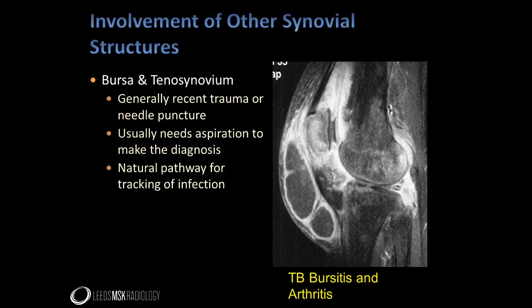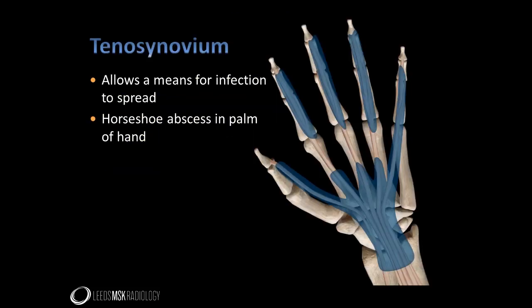Any synovial-lined structure can become infected, so in addition to joints we can also see infective bursitis and tenosynovitis. Generally the mode of inoculation in these structures tends to be through trauma including needle puncture. As with joint infection, aspiration will generally be required to make the diagnosis. Bursi and tendon sheaths can be large and provide a means for infection to track to sites remote from the original point of entry. A good example is seen in the hand: because of the anatomy of the tendon sheaths and volar wrist bursi, an injury introducing infection into the flexor tendon sheath of the thumb can result in infection spreading rapidly across the hand to the little finger tendon sheath, resulting in a so-called horseshoe abscess.